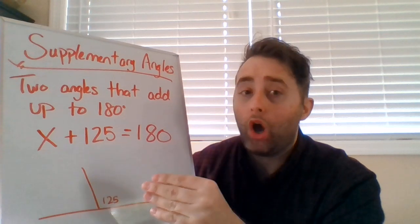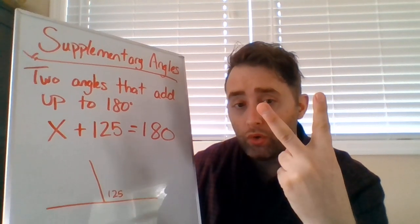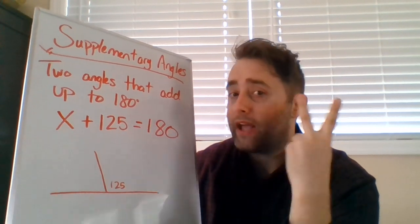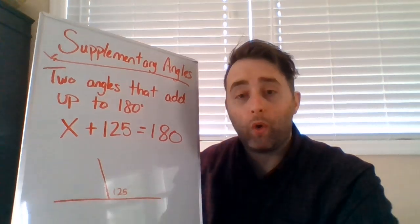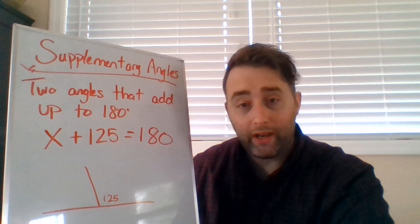So x, we don't know. We don't know the second angle. I said there's two. We know that one is 125. I don't know the second angle. So x, the unknown, plus 125 equals 180.